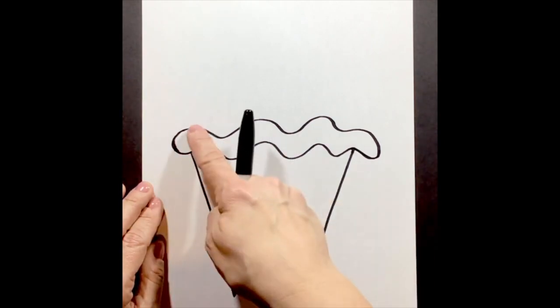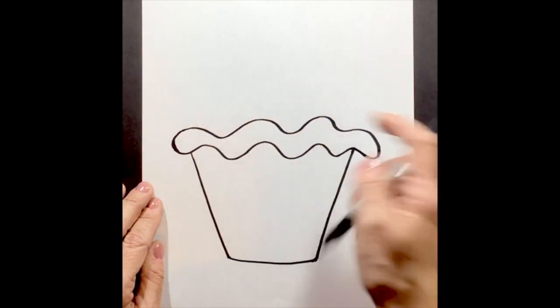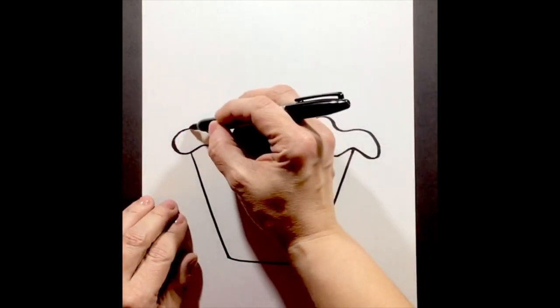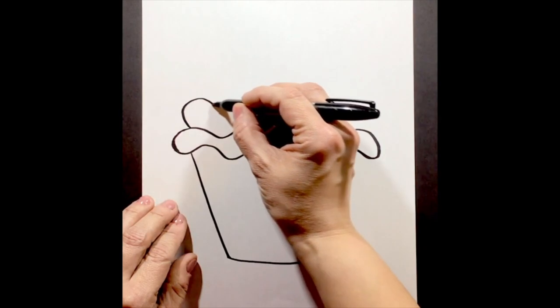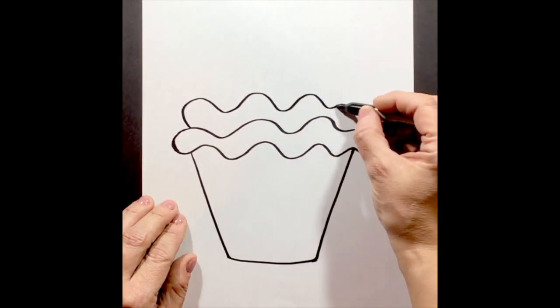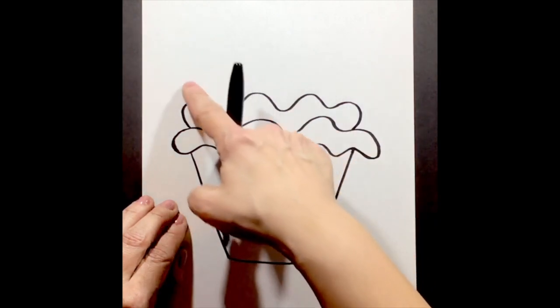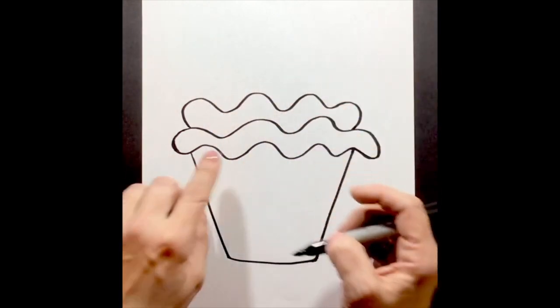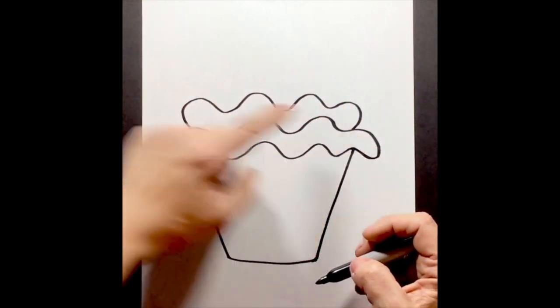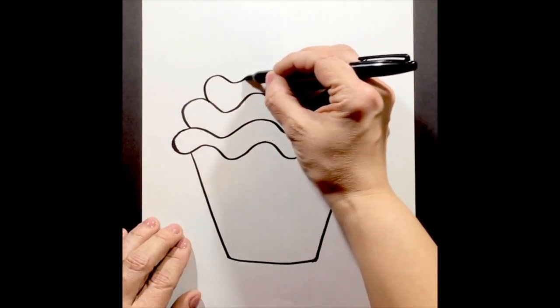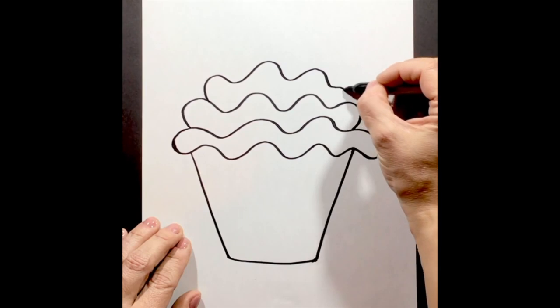Our next step, our step four, we're going to add another layer of a wiggly line, curvy line up top, for the next layer of our icing. So we're going to start, we're going to go around, and we're going to wiggle our curve line around. Our step five, we're going to add another layer. So we're adding a third layer. So right now we have one layer, two layers, and now we're going to go in for our third layer. Nice, tall icing on our cupcake.